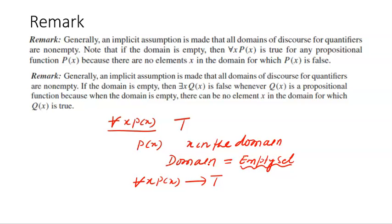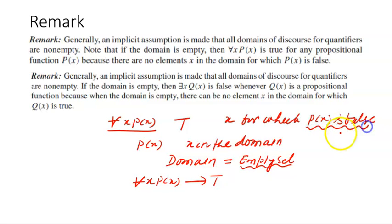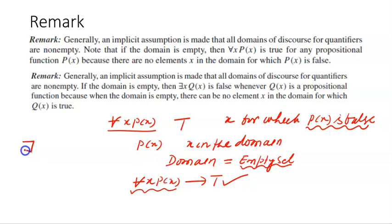The reason is that for this statement to be false, there should be some x for which P(x) is false. But since there is no x in the domain — since the domain is empty — there cannot be any such x for which P(x) is false. So that is why 'for all x, P(x)' will be a true statement.